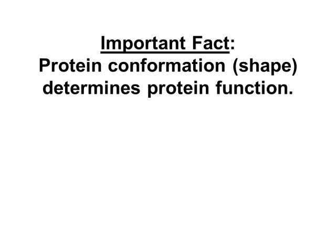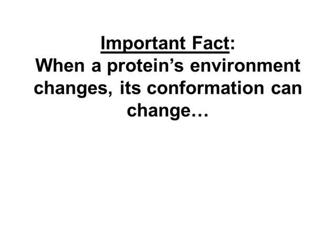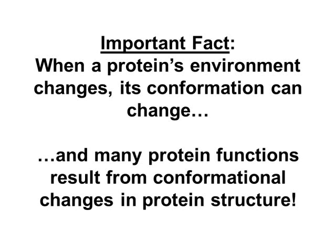Hydrogen bonding featured very prominently in holding the protein shape together. If you keep in mind how transient hydrogen bonds are and individually weak they are, any change in a protein's environment can potentially cause changes in hydrogen bonds and therefore cause changes in the protein's shape. That's not necessarily a bad thing — I'm not talking about the protein denaturing. When the protein's environment changes, its conformation can change, and that conformational change can result in something functional occurring.